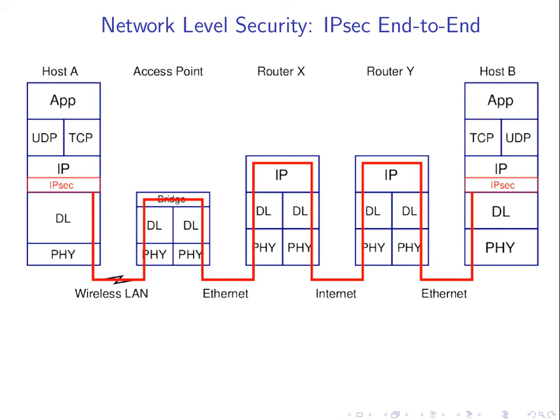Those are the four main solutions. IPsec is not commonly used for end-to-end encryption, but it is more common for other setups. When you look in your mobile phone under the VPN settings, there is an option to use IPsec — that's where IPsec and some other technologies are used. The next topic will return to VPNs.